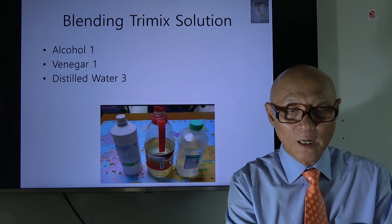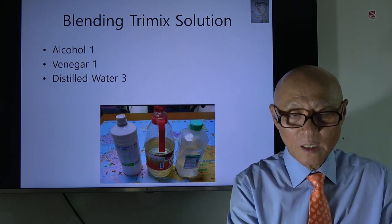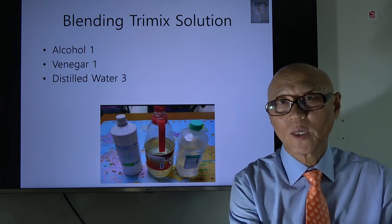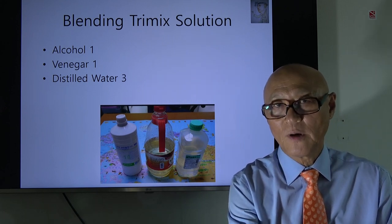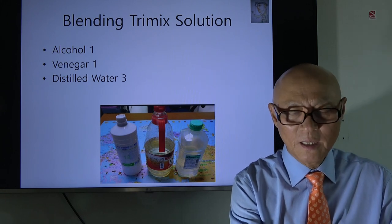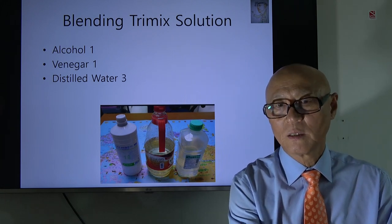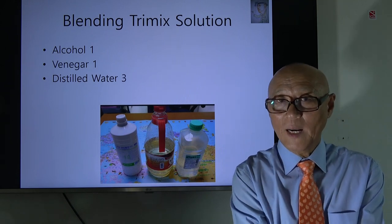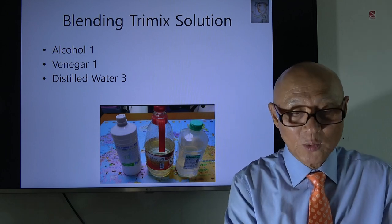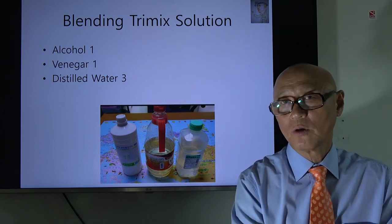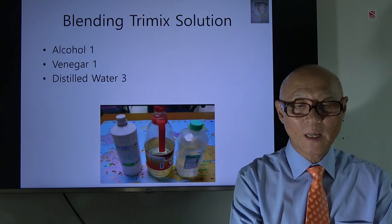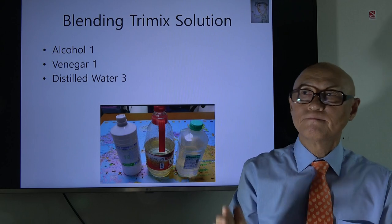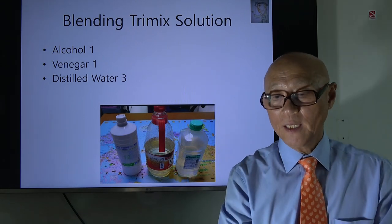In Korea, these are all available over the counter. Vinegar you don't get at the pharmacy — you get it at the supermarket. They are very cheap when bought individually for the bottles. But once somebody blends it and sells it, the price goes up. So why not just go to the pharmacy and supermarket, buy them separately, and blend them yourself in a 1:1:3 ratio?